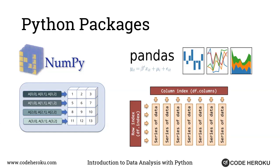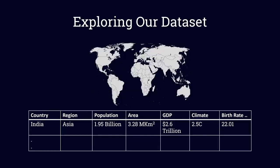Let's explore today's dataset. It's comprised of 227 countries, with features including the region where each country is located, population, area, GDP, and climate — where climate ranges from one to five, covering subtropical, tropical, and other climate zones — as well as birth rate, death rate, and infant mortality. All of these features for each country are listed in our dataset and we'll be performing data analysis on them.